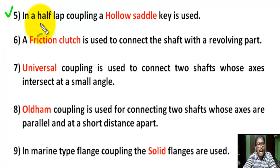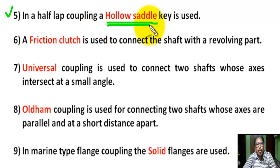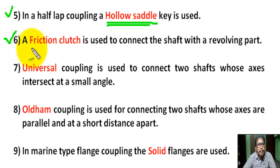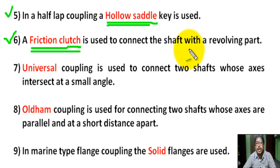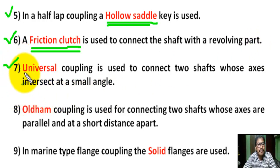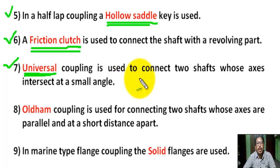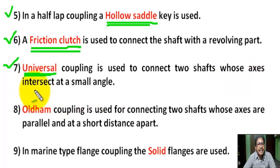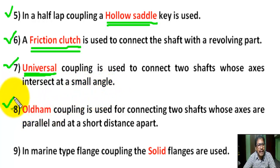Question number 5: In a half lap coupling, a hollow saddle key is used. Question number 6: A fixed clutch is used to connect the shaft with revolving parts. Question number 7: Universal coupling is used to connect two shafts whose axes intersect at a small angle.